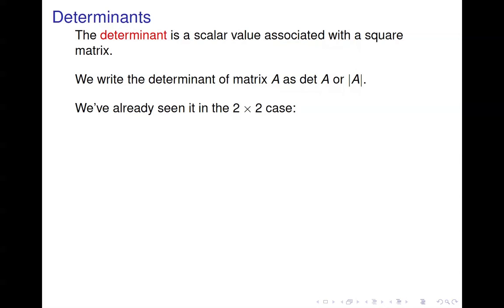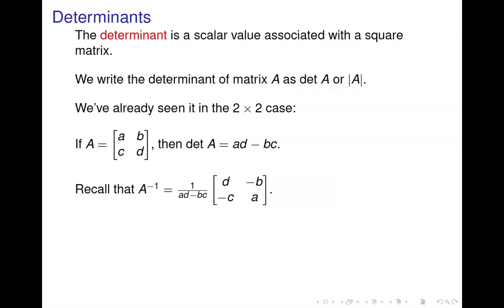We've actually already seen the determinant in the 2x2 case. If we have A as a generic matrix ABCD, then the determinant of A is A times D minus B times C. We've seen that because in the formula for the inverse of a 2x2, we multiplied by 1 over AD minus BC — that is, 1 over the determinant of the matrix.